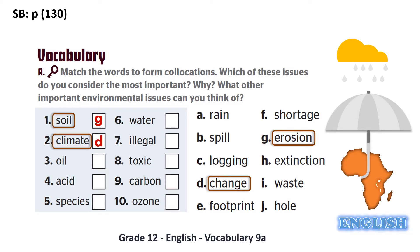The third environmental issue is related to oil and is called oil spills, referring to liquid petroleum released into the marine ecosystem, harming marine life. And because of acidic components such as sulfuric or nitric acids in rain, we refer to acid rain as environmental issue number four.